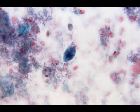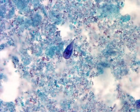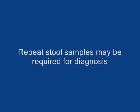This next photograph is a Giardia cyst under oil immersion in a trichrome stain. And this next photograph is the trophozoite stage, also in a trichrome stain. Because of sporadic shedding of cysts, repeat stool samples may be required for diagnosis.